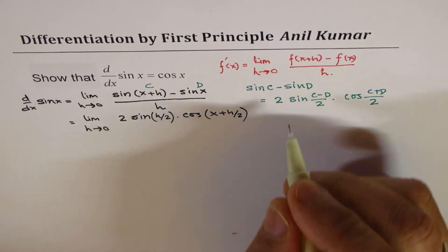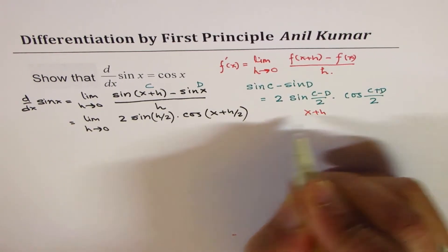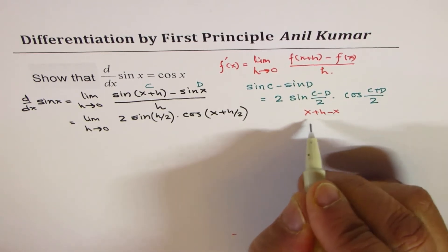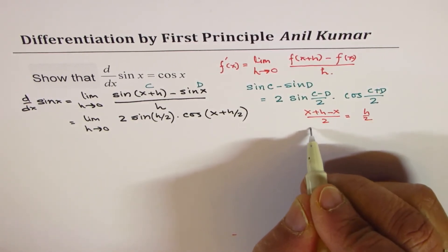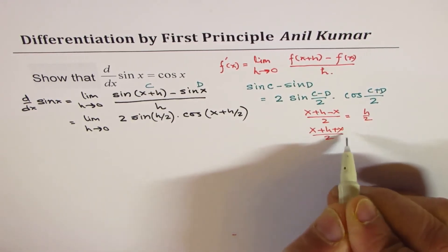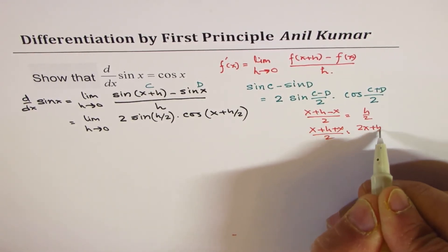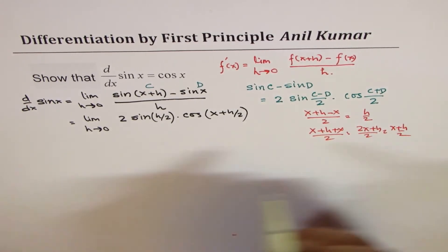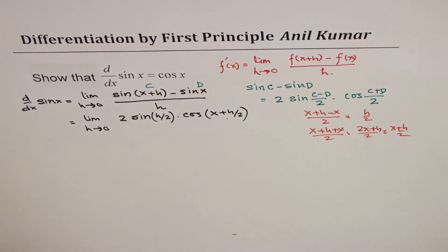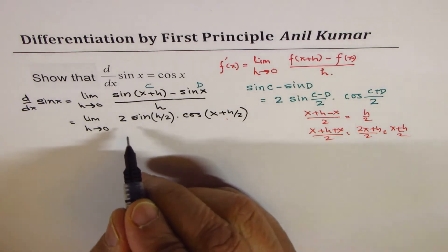So what I am trying to do here is when I do x plus h minus x over 2, what I get is h by 2. And when I get x plus h plus x by 2, I get 2x plus h by 2, which is x plus h by 2. That is what we wrote here, over h.